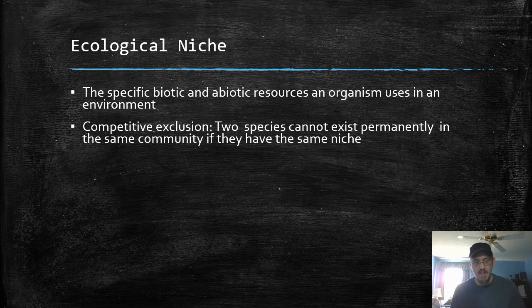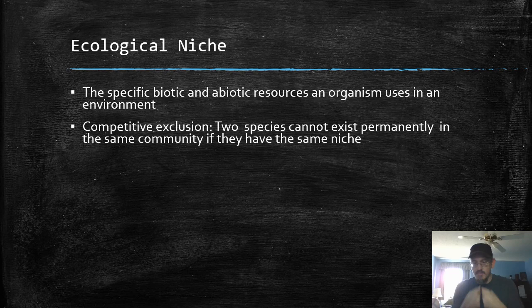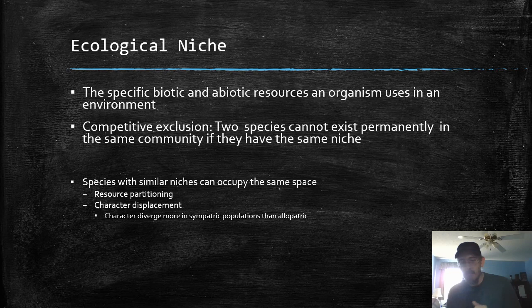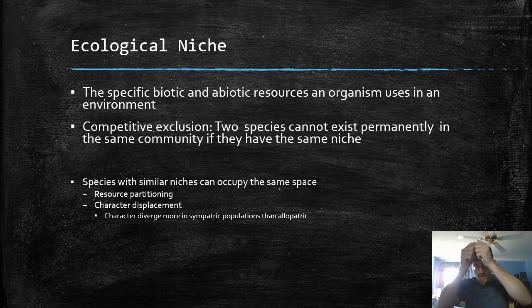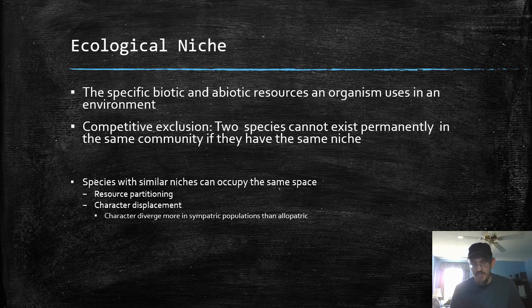One thing that ecologists have determined is that there's this thing known as competitive exclusion. Two species with the same niche will not coexist permanently in the same community — one will compete with the other until one wins. However, there are ways they can both exist in the same community. The first thing they can do is resource partitioning. Maybe these two lizards both live in a tree and compete for resources. One might move down to living on the trunk of the tree while this species lives in the top. So they partition the resources, use different resources, change their habits a little bit, and then they can both coexist in the same environment.